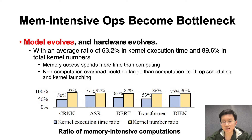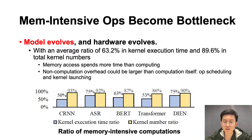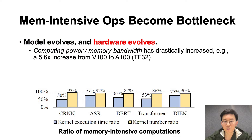However, we observe that in modern machine learning models, memory-intensive computation becomes the performance bottleneck. For the five models shown here, which are widely used in today's industry, more than 60% of the kernel execution time is contributed by memory-intensive computations, caused by expensive off-chip memory access. Moreover, a large number of kernels leads to severe non-computation overhead, including op scheduling and kernel launching. The overhead could be larger than the computation itself in many recent models. Also, the ratio of computing power and memory bandwidth has drastically increased in recent hardware, making memory-intensive computation more important for performance optimization.